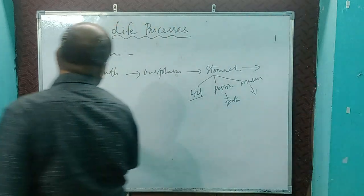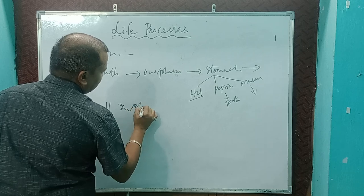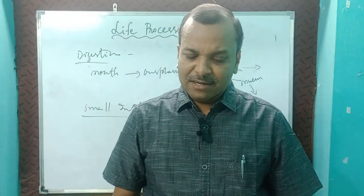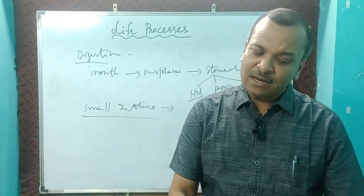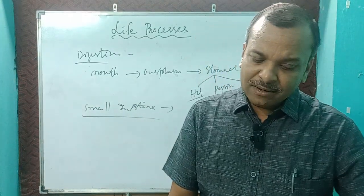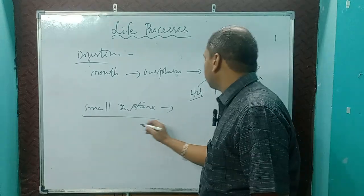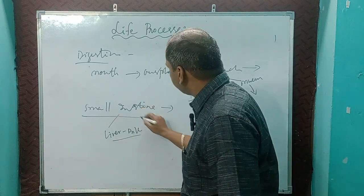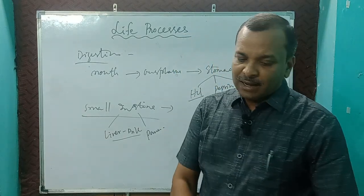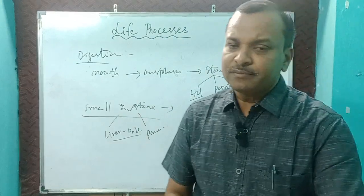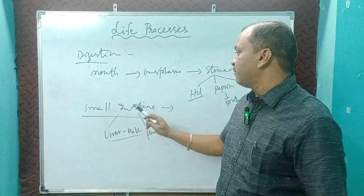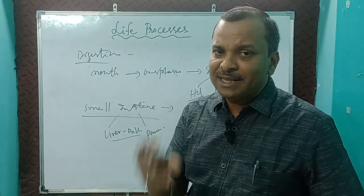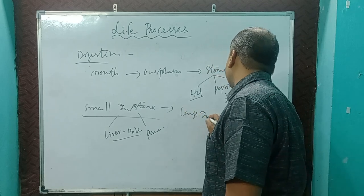After the stomach the food will go to the small intestine. Maximum digestion occurs here in the small intestine. From the liver, bile juice comes; from the pancreas, pancreatic juice and other enzymes are also involved. Some other juices also secrete from the small intestine to help in digestion.